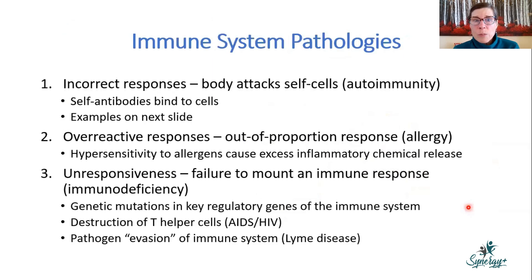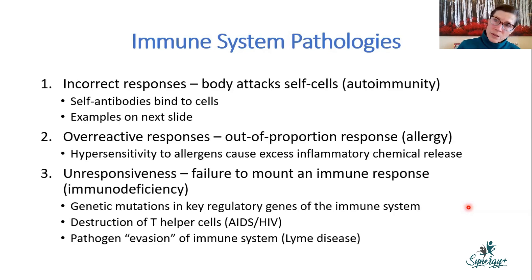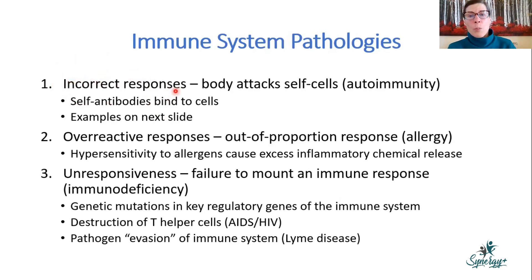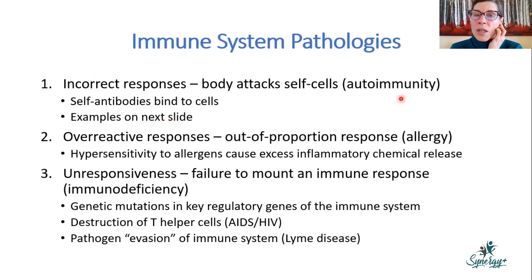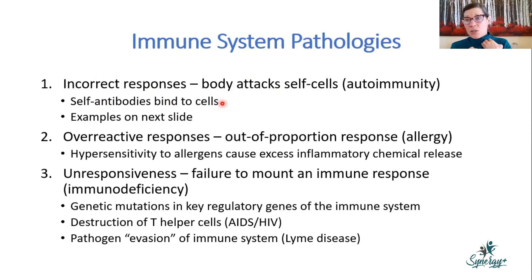The immune system is powerful, but sometimes things can go wrong. Pathologies include incorrect responses where the body attacks itself — autoimmune diseases — where antibodies bind to your own cells. There can also be overreactive responses (allergies) or underresponsive states (immunodeficiency), and certain pathogens have learned to evade the immune system.